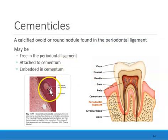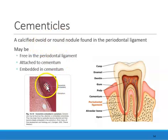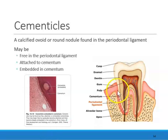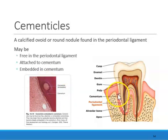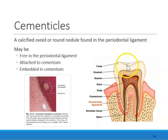Cementicles are basically calcified — hard, ovoid or round nodules — and they can be found in the periodontal ligament fibers. They could be attached to the cementum, or completely inside the cementum. These cementicles can really be found anywhere, but are found typically in the aging population, or if someone has had a lot of trauma to the tooth.